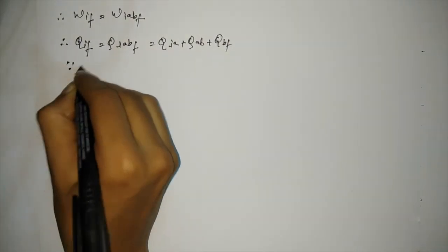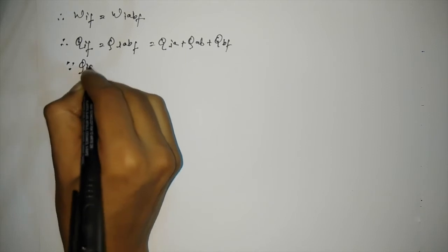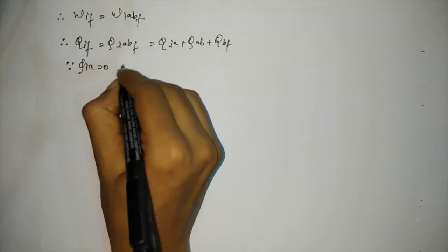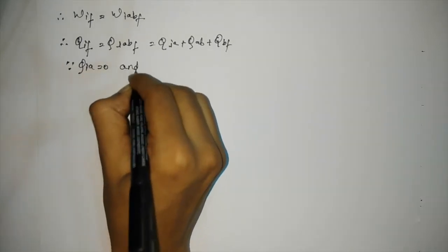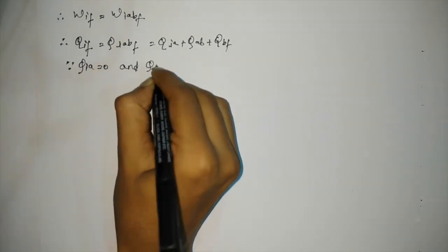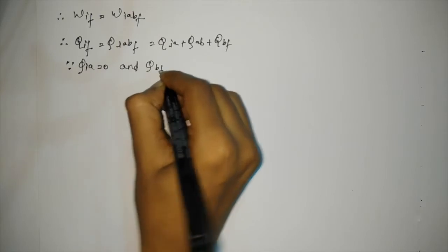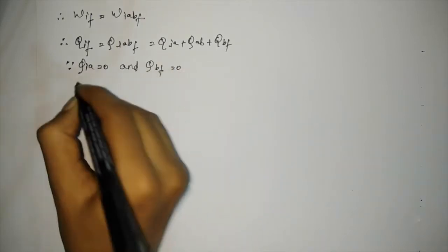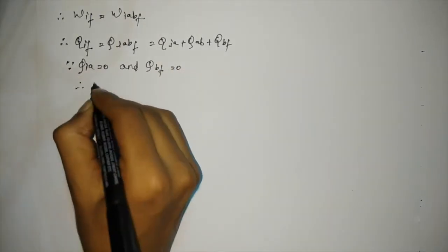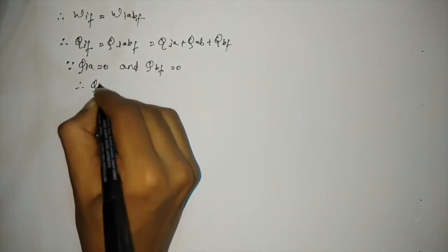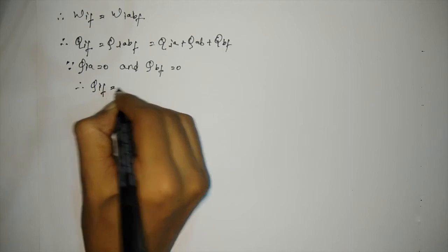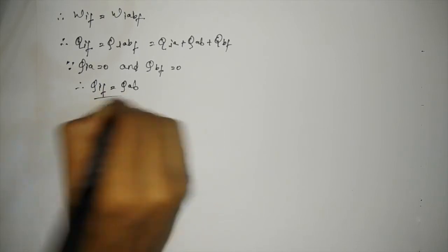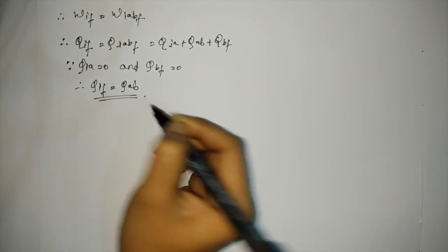Since Q_ia equals 0 and Q_bf equals 0, therefore Q_if equals Q_ab.